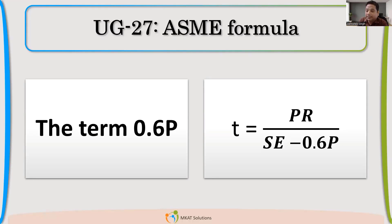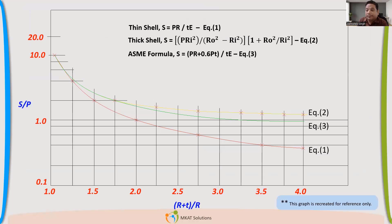Now you see the graph again. If you can see this green color, the green color equation is the ASME equation. See the beauty, for lower ratios, it's meeting with thin shell theory. For higher ratios, it's very close to equation two. So it's predicting the stresses very accurately, even for thick shell, but still there is limitation.